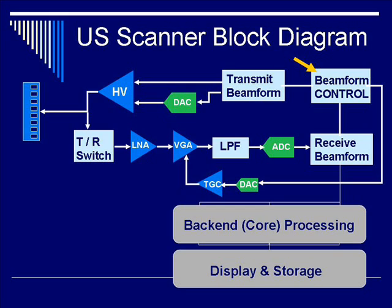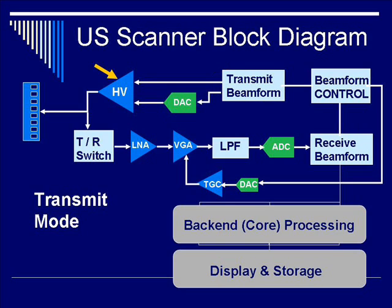In terms of how the chain of events happens within transmission, the beamformer control is the brains behind beam shaping of the transmission pulse. During transmit mode, it delivers a set of digitizing sequences to the transmit beamformer, which in turn gives off a sequence of pulses that, in conjunction with the DAC (digital-to-analog converter), drives the high-voltage pulsar. The high-voltage pulsar yields an output signal that drives the transducer itself. Due to the piezoelectric effect, this electrical signal is converted into an acoustic signal.